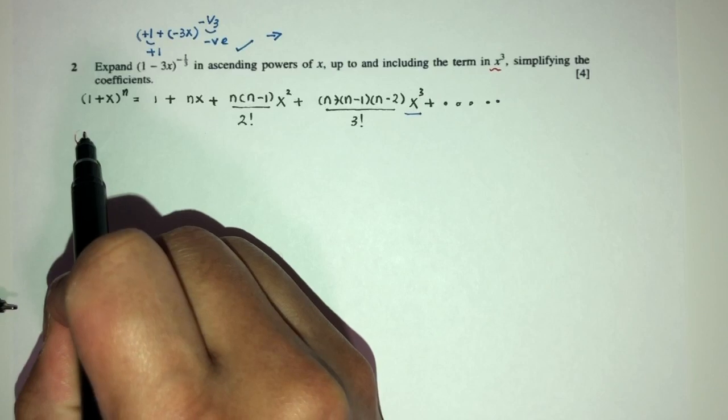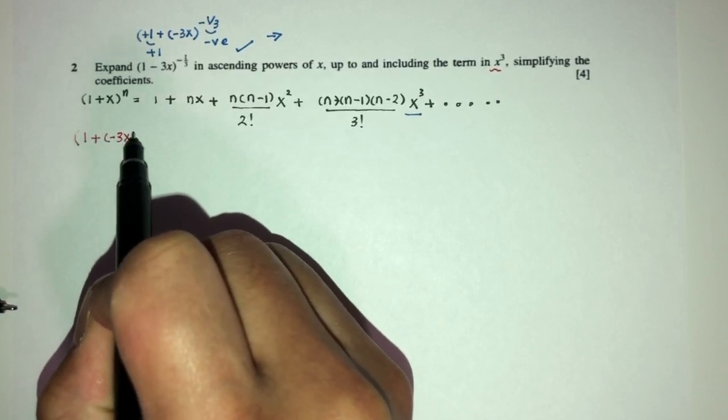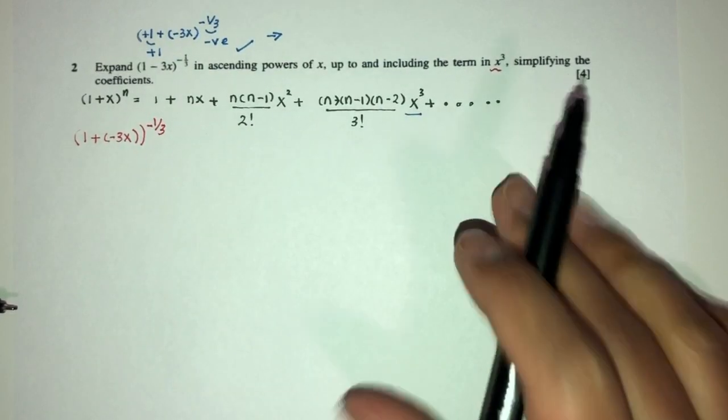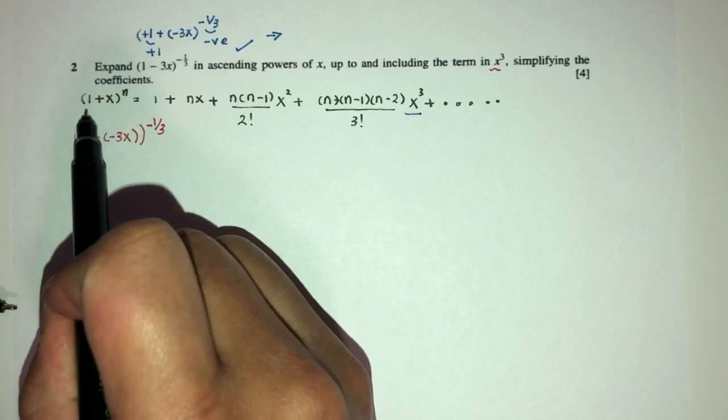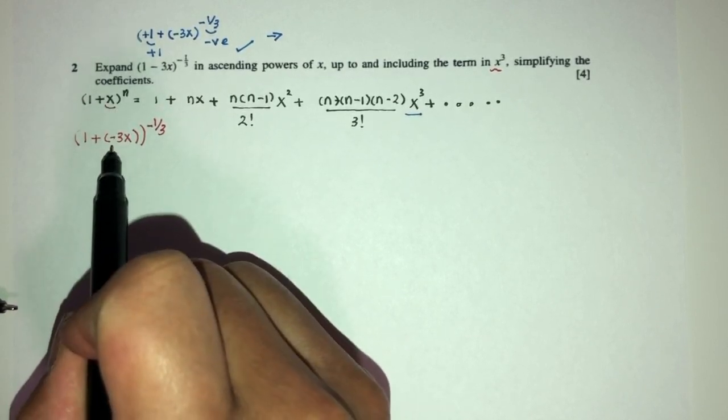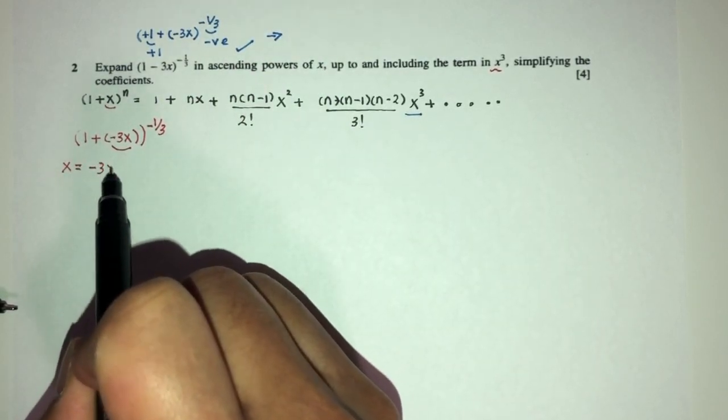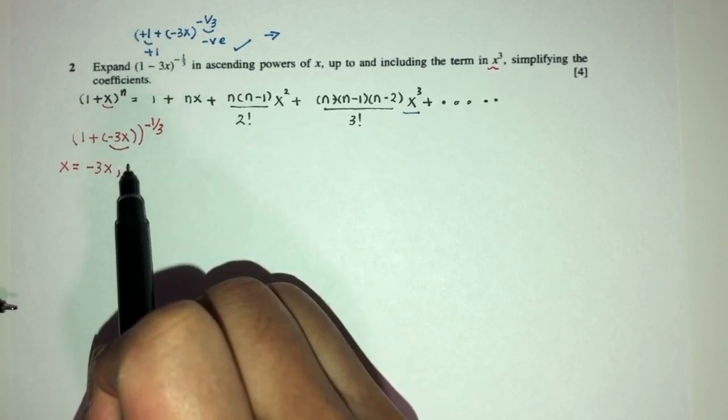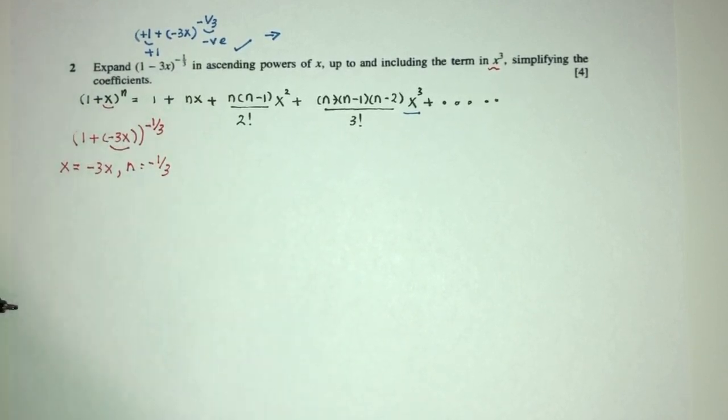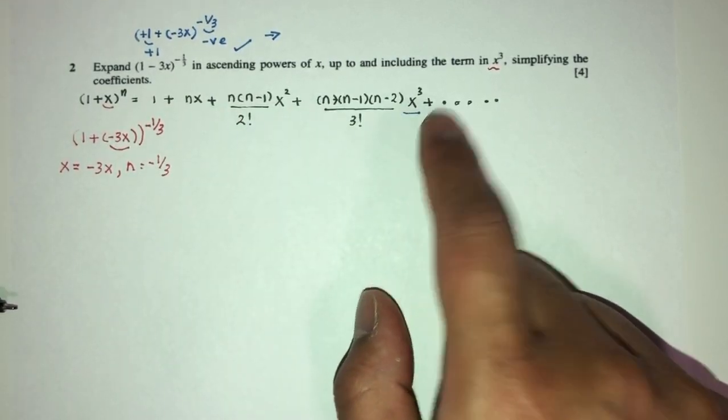Now, this is the general formula. Now, we just have to do by comparison and then replace in the formula. How can we do this? So, let me write this expression right below this one. So, by comparison, we have 1 + (-3x). Do you agree? The power here is -1/3. So, from what I can see, this is 1. It's exactly the same. Here we have x, but here we have -3x. Okay, fine. So, we can say x here is equal to -3x and the power n is equal to -1/3. So, now, by having all these values listed out, we can replace in this expansion one by one.